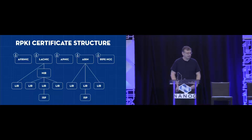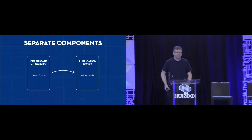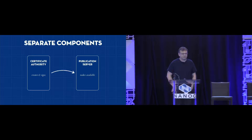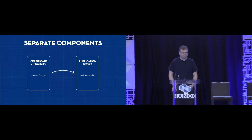Depending on which region you're in, there might be national internet registries, and ultimately the certificates end up at the holders of resources — basically you. Because there are certificates, there need to be certificate authorities, which create and sign both the certificates and the ROAs. And because it's a public thing that everyone needs to gather, there is also a necessity to publish this information. For practical reasons, the CA function and the publication server have been separated.